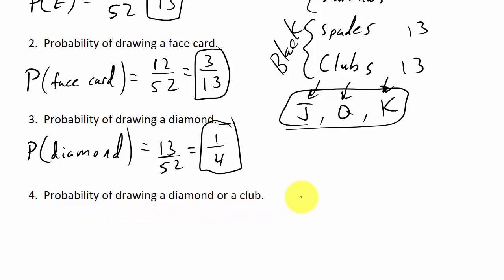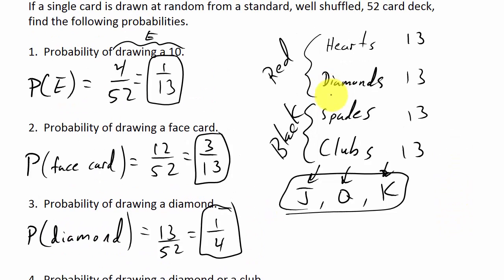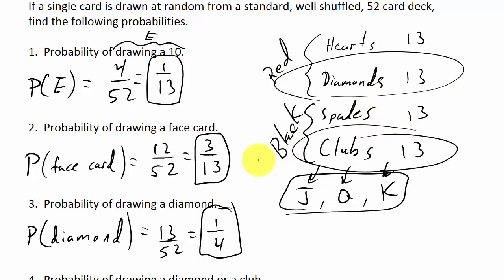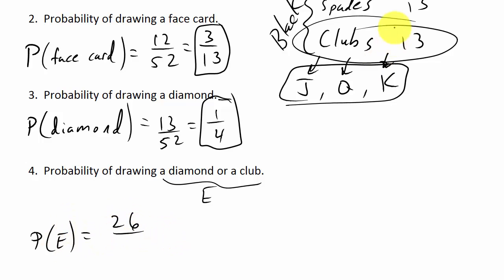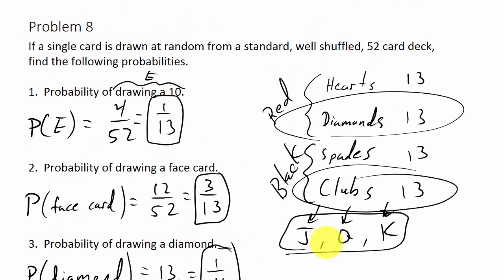What's the probability of drawing a diamond or a club? There are 13 clubs and 13 diamonds, giving 26 successful outcomes out of 52 possible. That's 26/52, which simplifies to 1/2.